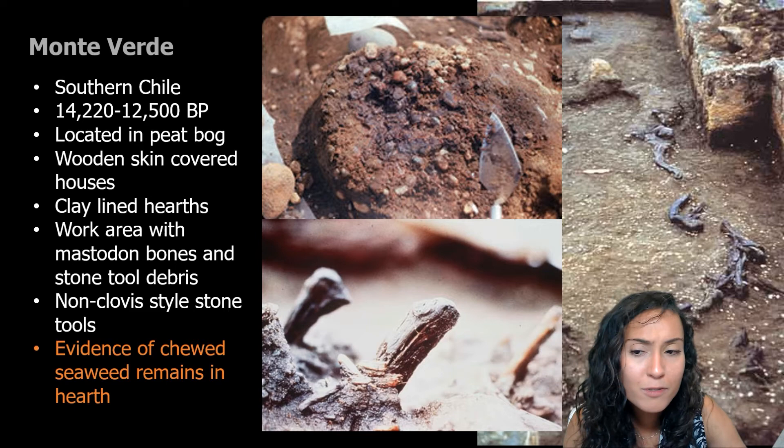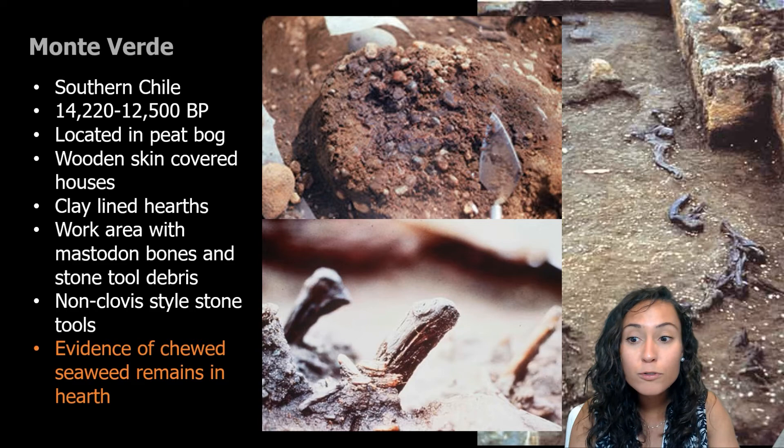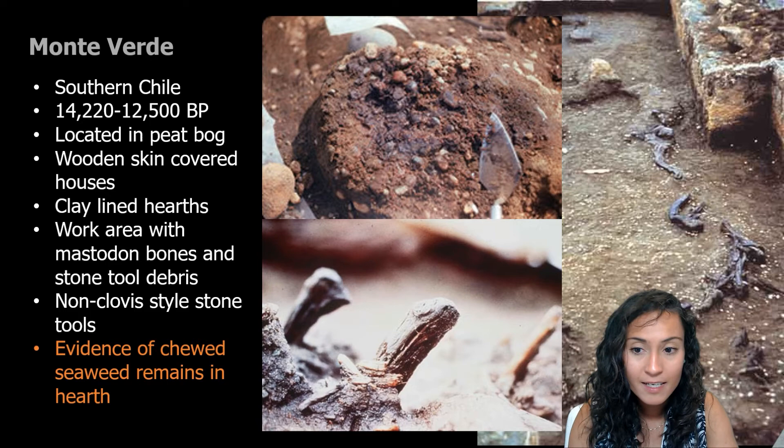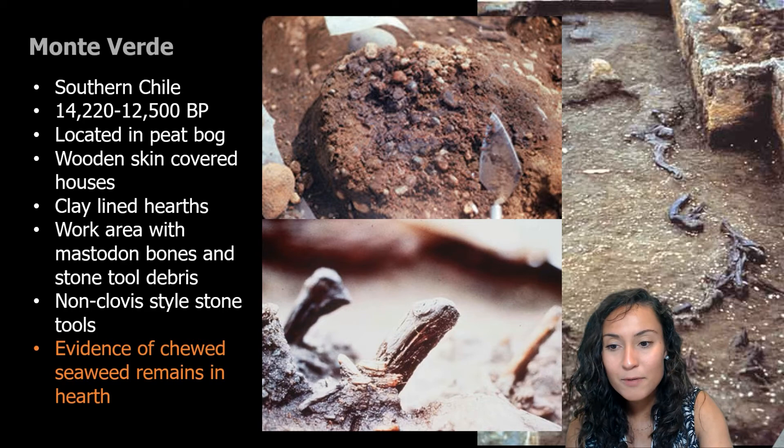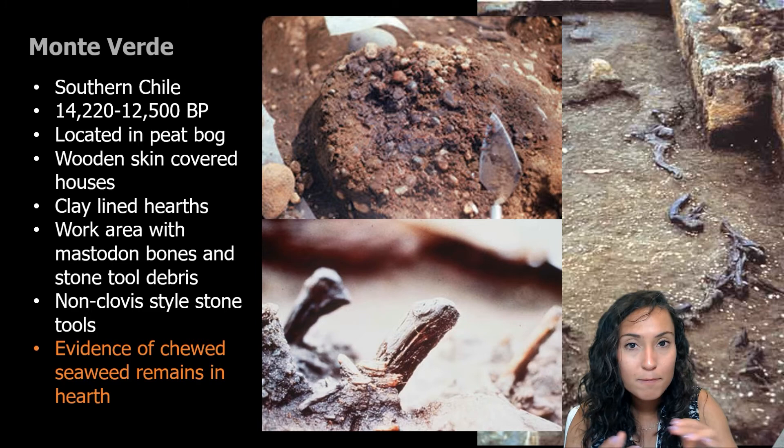Perhaps most interesting, excavations in 2008 revealed chewed seaweed remains in one of the hearths at Monte Verde, dating to between 14,000 and 13,000 years ago — clearly prior to Clovis. This seaweed material appears to have been cooked and then mixed with other plants, and was likely chewed for medicinal purposes.